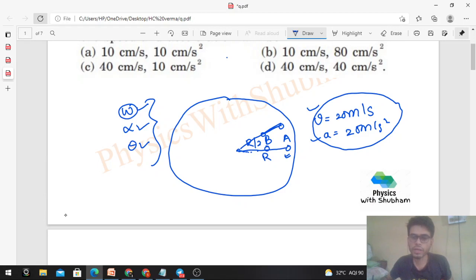And the angular parameters and the linear parameters are related. For example, if you relate V to omega, you have to multiply with R. V is equal to R omega. Similarly, A is equal to R alpha. In the same way, S is equal to R into theta. So this is a linear relation with the angular parameters.